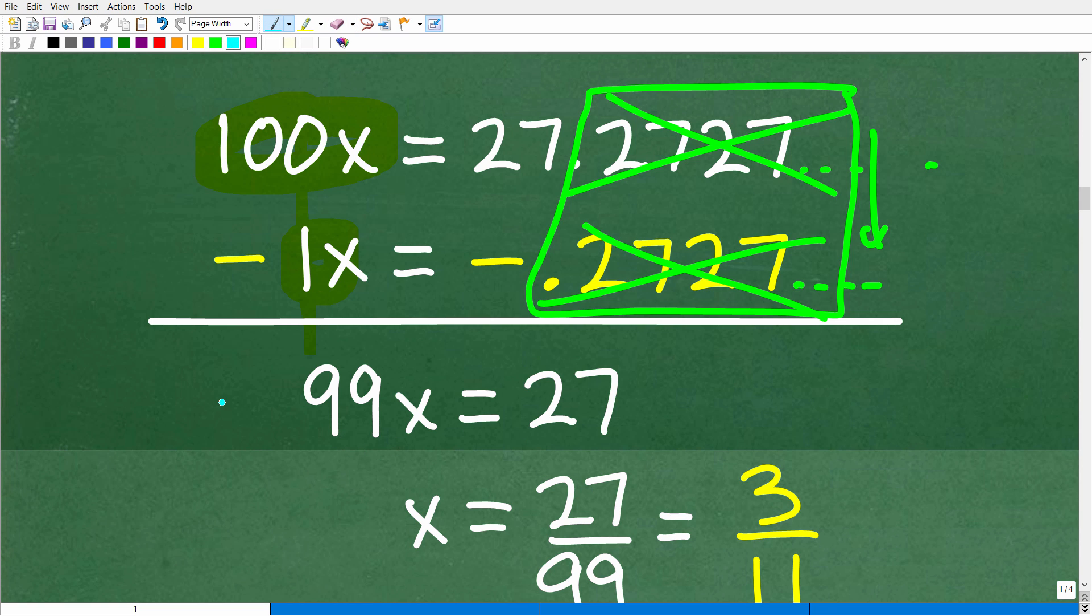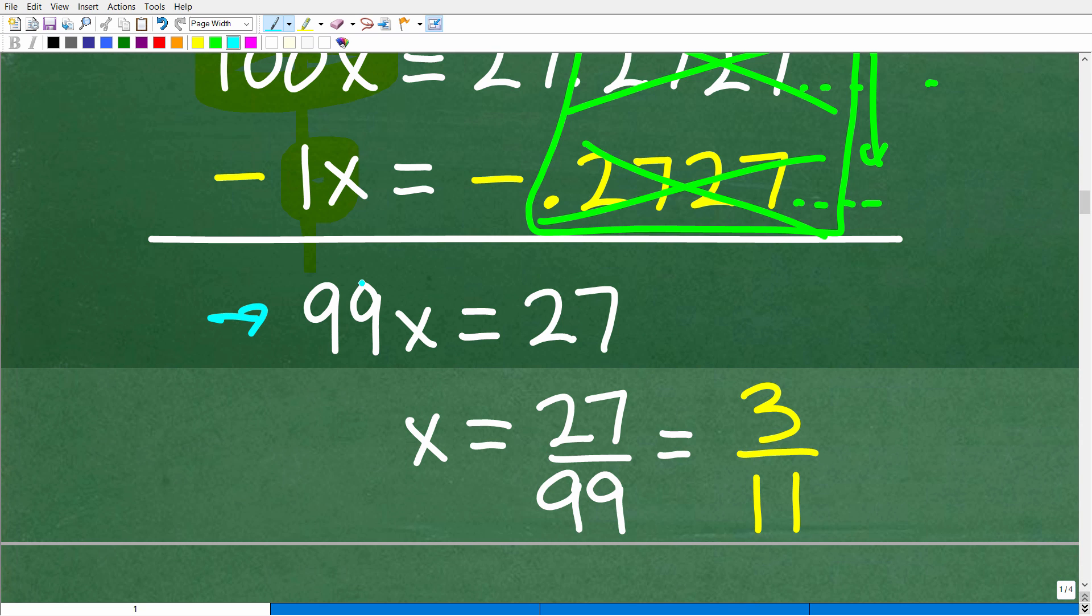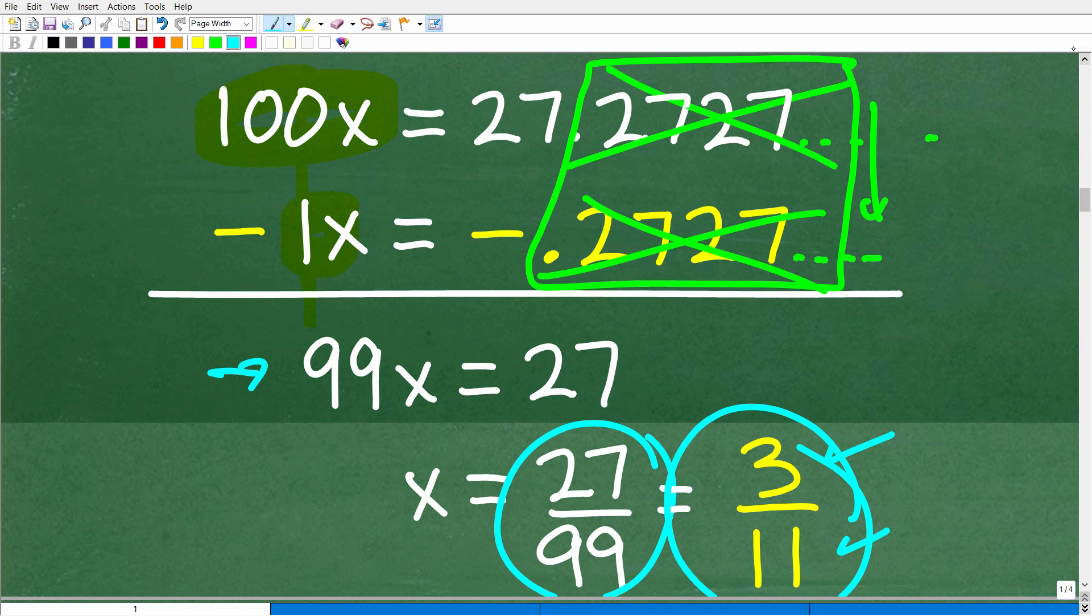So now let's go ahead and solve for x. When we solve for x, we're going to divide both sides of the equation by 99. And then we can simply reduce this fraction. 9 goes to 27 three times, and 9 goes to 99 eleven times. And here, x is equal to 3 over 11. So this is what this is equal to.